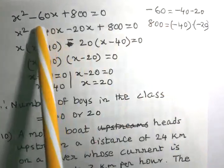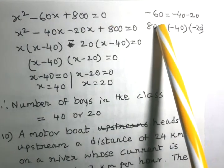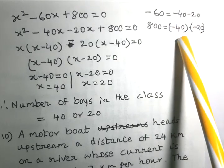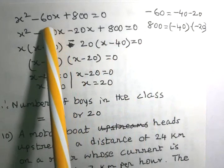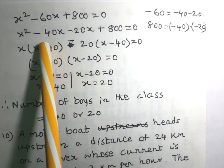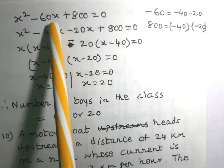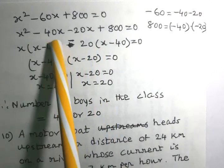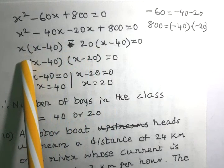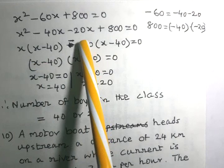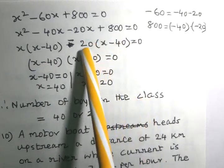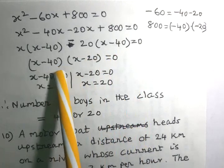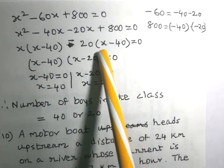The middle term minus 60x is written as the sum of minus 40x and minus 20x, since their product is 800. Considering x squared minus 40x and taking x as common factor, we write x times x minus 40. Considering minus 20x plus 800 and taking minus 20 as common factor, we write minus 20 times x minus 40. Taking x minus 40 as the common factor, we get x minus 40 times x minus 20 equals 0.